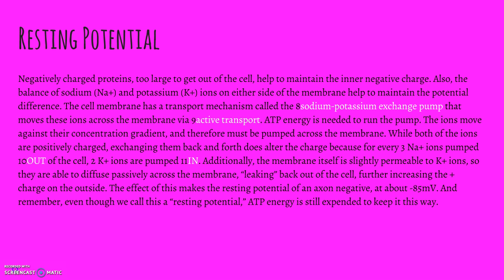The balance of sodium and potassium ions on either side of the membrane helps maintain the potential difference. The cell membrane has a transport mechanism called the sodium-potassium exchange pump that moves these ions across the membrane via active transport. ATP energy is needed to run this pump. The ions move against their concentration gradient, so they have to be pumped across the membrane with ATP. For every three sodium ions pumped out, there are two potassium ions pumped in. Additionally, the membrane is slightly permeable to potassium ions, so they diffuse passively back out, further increasing the positive charge outside. This makes the resting potential of an axon about negative 85 millivolts. Even though we call it resting potential, ATP energy is still expended to keep it that way.